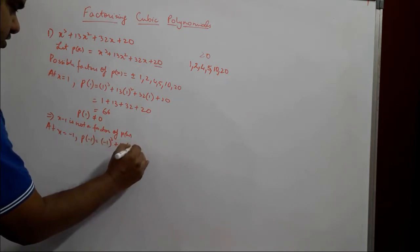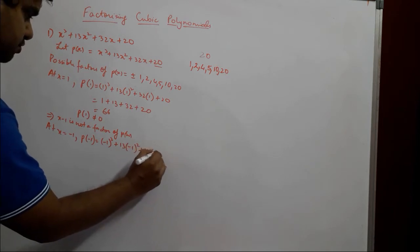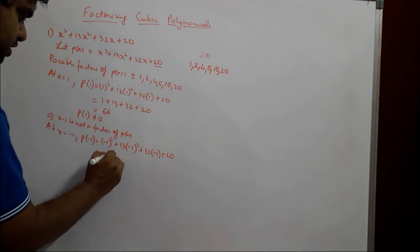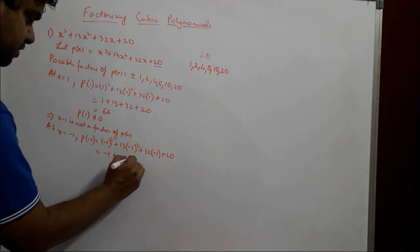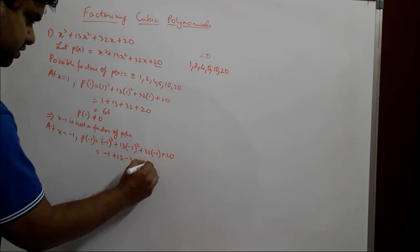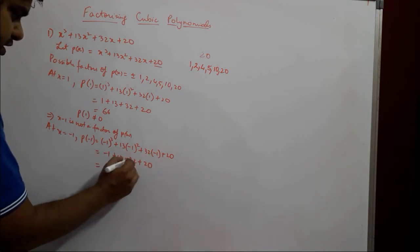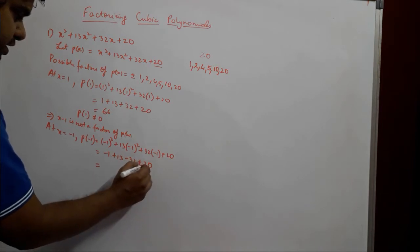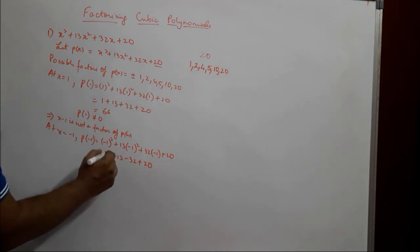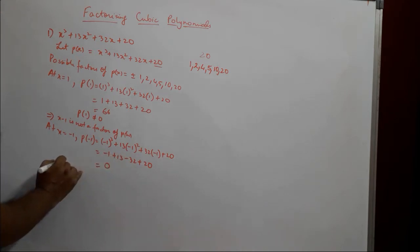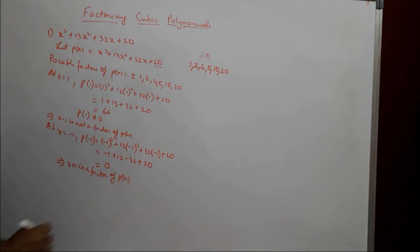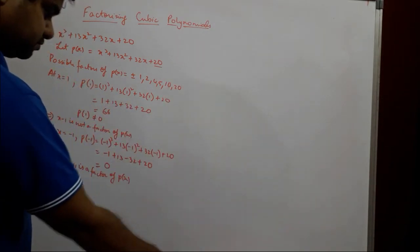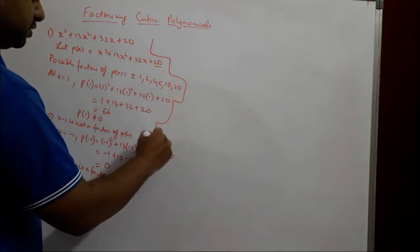Now testing x = −1: p(−1) = (−1)³ + 13×(−1)² + 32×(−1) + 20 = −1 + 13 − 32 + 20. Here −1 and −32 give −33, and 13 + 20 gives +33, so positive 33 and negative 33 cancel to give 0. This implies that (x + 1) is a factor of p(x). Now that we have found a factor, let us begin the division.